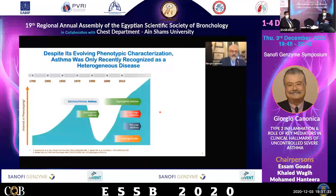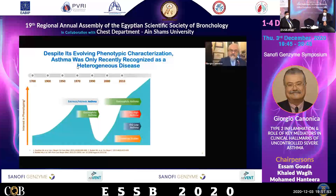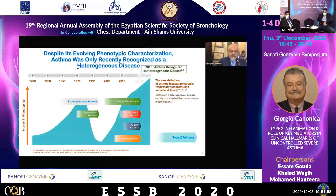Asthma was defined in the beginning as extrinsic and intrinsic. Then the concept of eosinophilic asthma was developed, and also the TH2 asthma high and low was considered. But this was not the correct definition up to now.